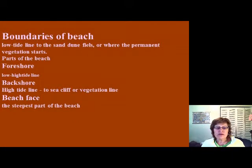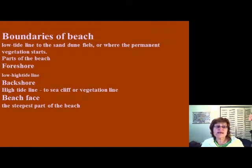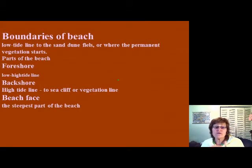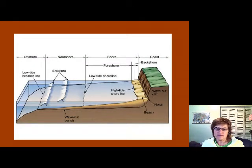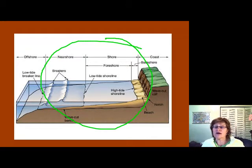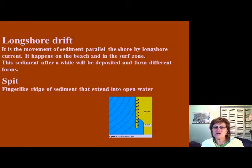The beach extends from the low tide line to the sand dune fields or where permanent vegetation starts. The foreshore is the low to high tide line; the backshore extends from the high tide line to the sea cliff or vegetation line; and the beach face is the steepest part of the beach. Remember these zones: foreshore, backshore, and beach face.